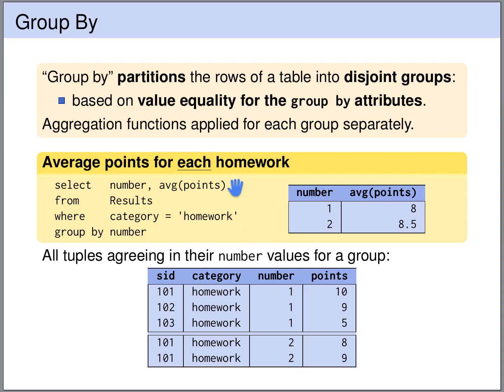We are computing the average number of points. This is applied to the average number of points for the first group, giving us 8, and the average number of points for the second group, giving us 8.5. Also, now that we are forming groups based on attribute values, in each group all the rows have the same value of NUMBER. Therefore we are now allowed to use these GROUP BY attributes in the SELECT clause. All the rows in one group have the same number, so it's clear what number we are referring to.